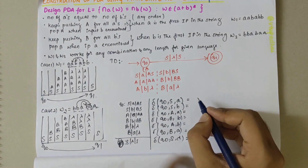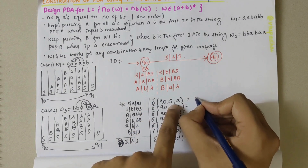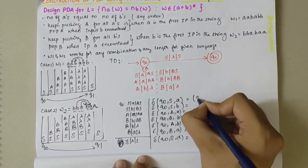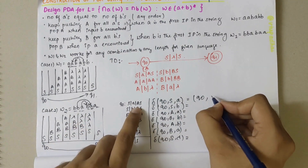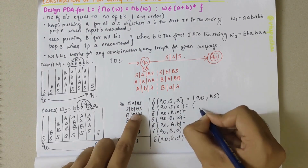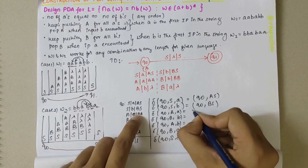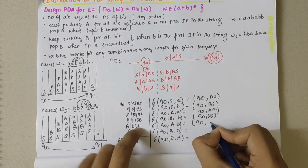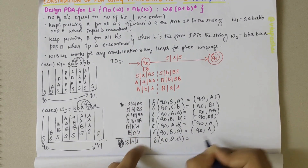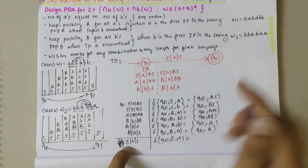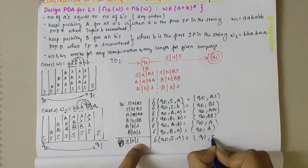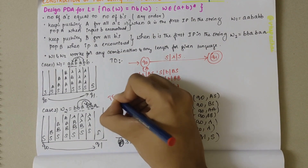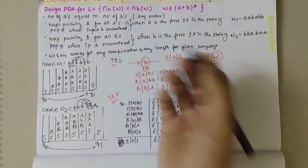Either the state remains the same or changes. For transition Q0 with S and A: the state stays Q0 and remaining stack contents are A and S. Similarly Q0 with S and B gives Q0 and BS; Q0 with A and A gives Q0 and AA; Q0 with B and B gives Q0 and BB; Q0 with A and B gives Q0 and lambda; Q0 with B and A gives Q0 and lambda. For S lambda S, it changes to Q1, giving Q1 and S.